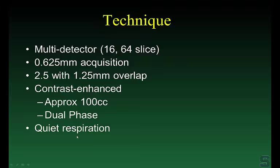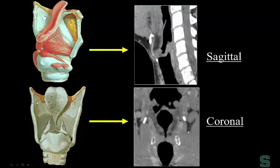Now we just do quiet respiration. One of the reasons to do the thin-section imaging was to get these reformats. On the sagittal view, you get a very nice view of the free margin of the epiglottis, the hyoid bone, the pre-epiglottic space, and the true vocal cords. On coronal images, here's the free margin of the epiglottis, the false vocal cord, the laryngeal ventricle, and then the true vocal cord. These detailed reformats can only be acquired with thin-section imaging.